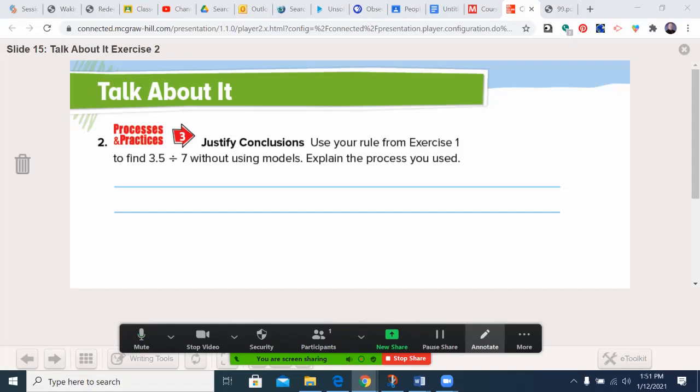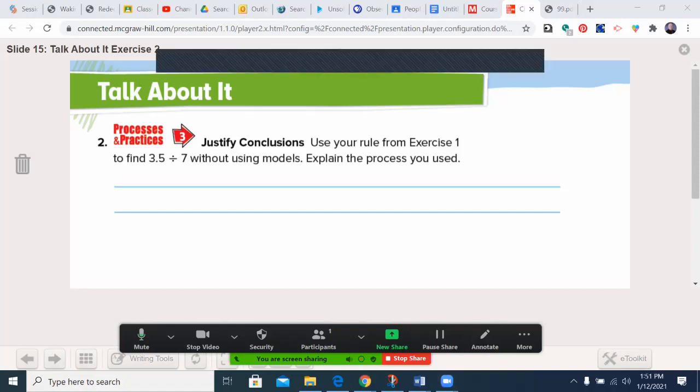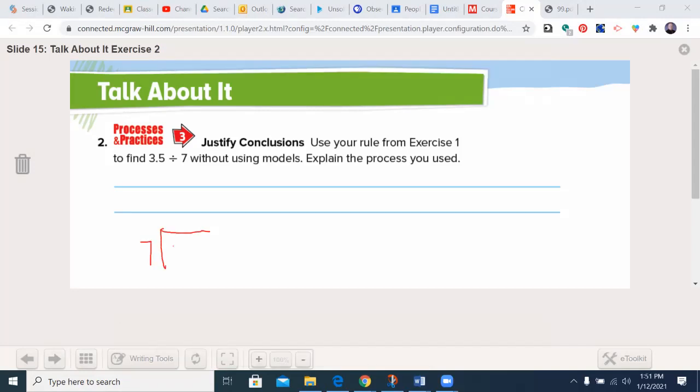All right. Justify conclusions. Use your rule from exercise one. That's what we just talked about. Find 3.5 divided by 7 without using models. Explain the process. Well, I could actually use the standard algorithm. There's 7 going into 3.5. Put my decimal point up here. 7 does not go into 3, but it does go into 35 five times. 5 times 7 is 35. I subtract. At this point, I'm no longer worried about the decimal. It's only when it goes up right above it. And we end up with an answer of 0.5.